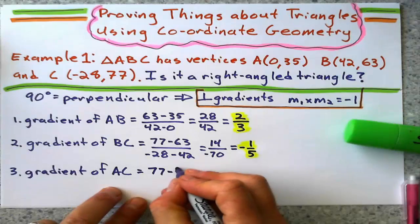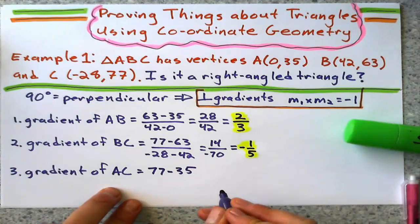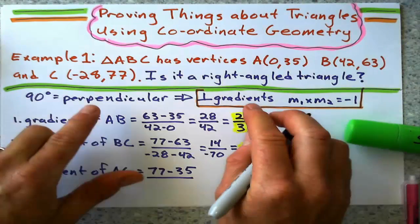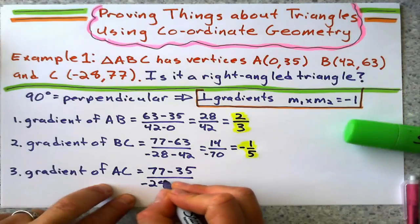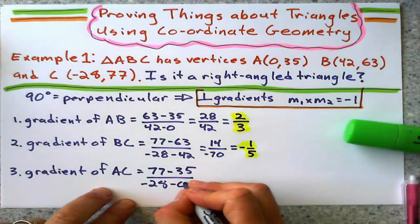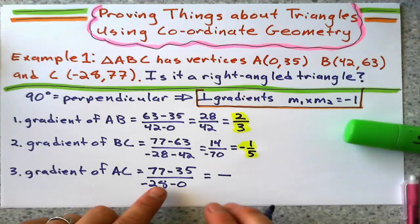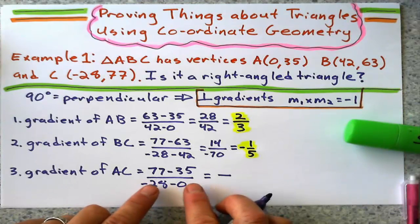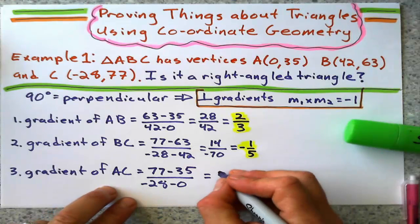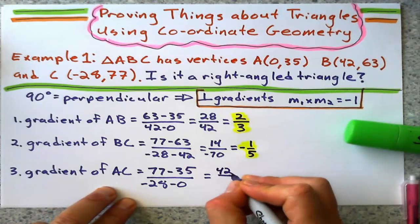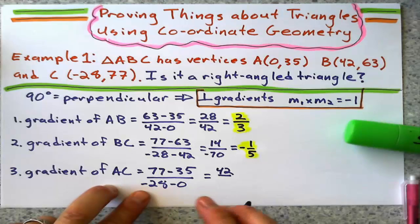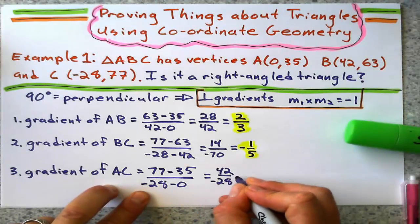77 minus 35 over change in X. Negative 28 minus 0. What do we get here for change in Y? We get 22? No, 42. And negative 28 minus 0 is just negative 28. I think I might have a match here